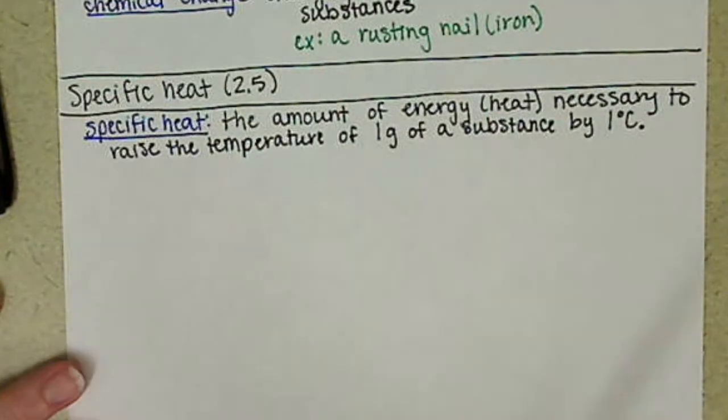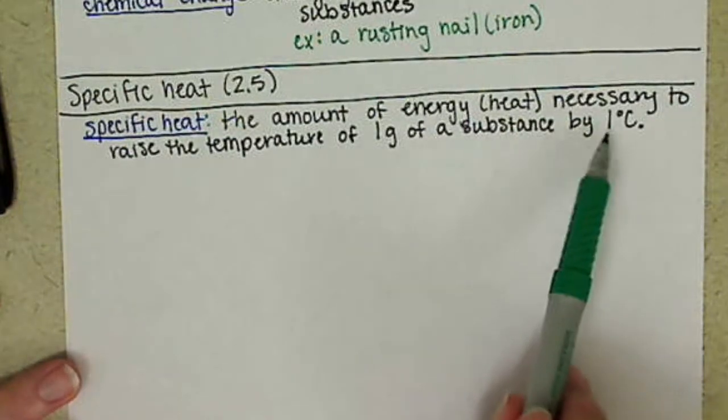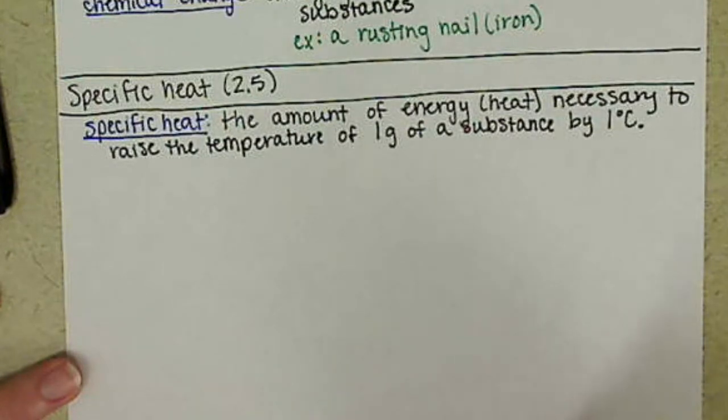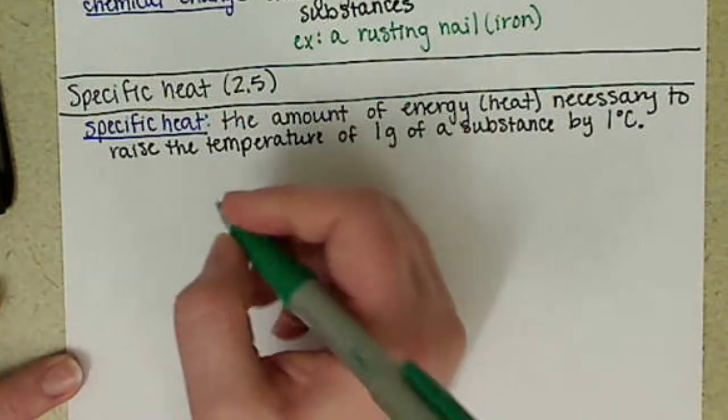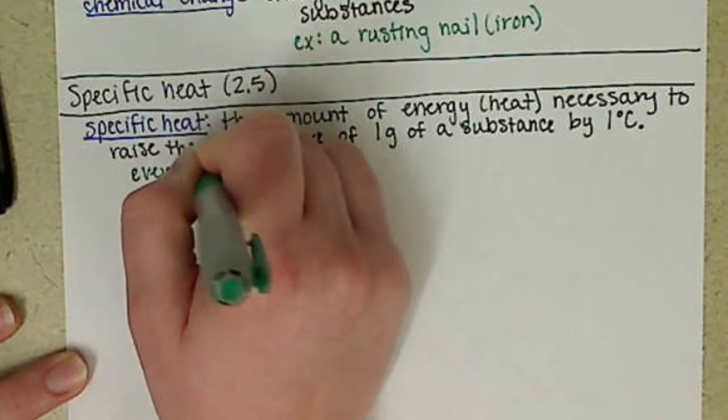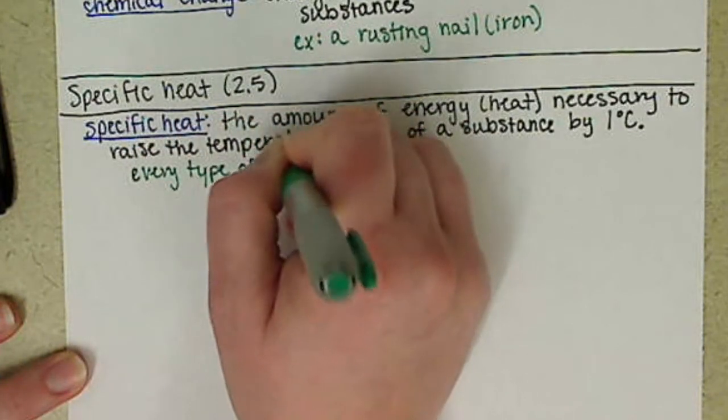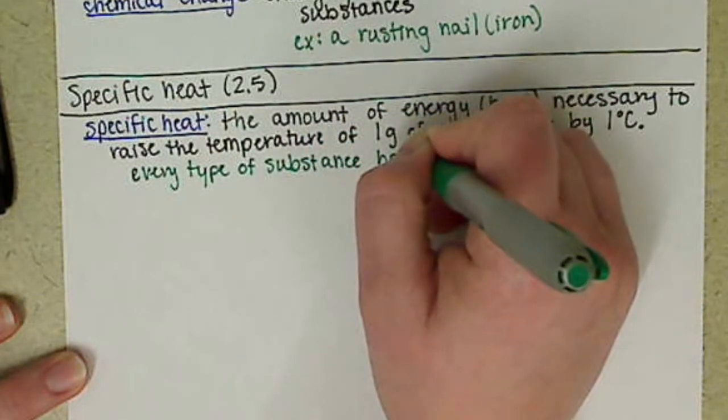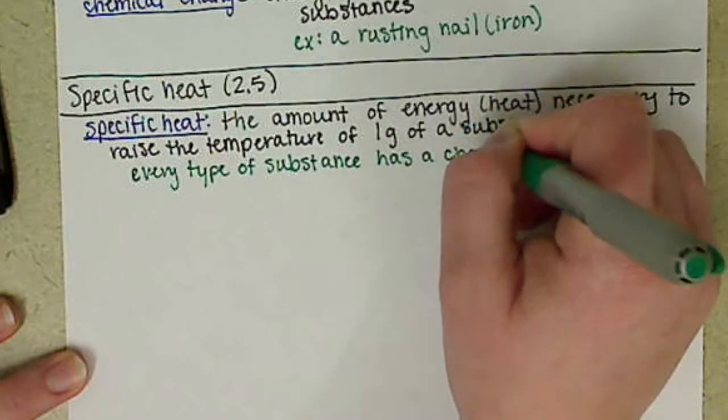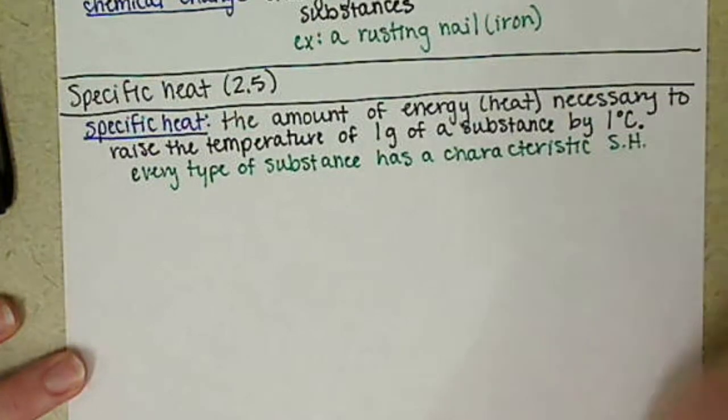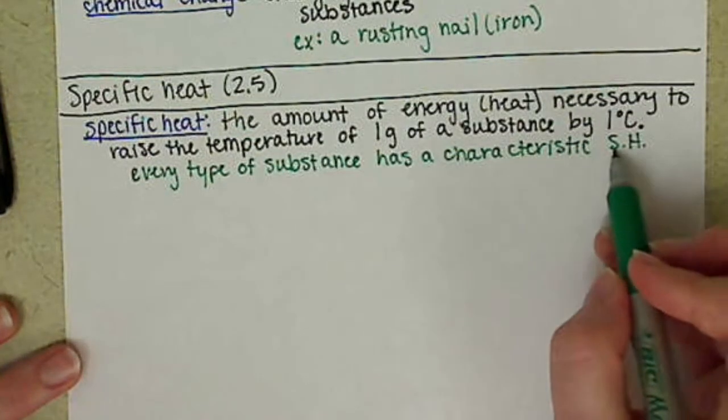To raise the temperature of one gram of a substance by one degree Celsius. So just like our heat of fusion and heat of vaporization, every substance had their own value for those. Every type of substance has its own specific heat. And I shorthand specific heat, just an S and an H.